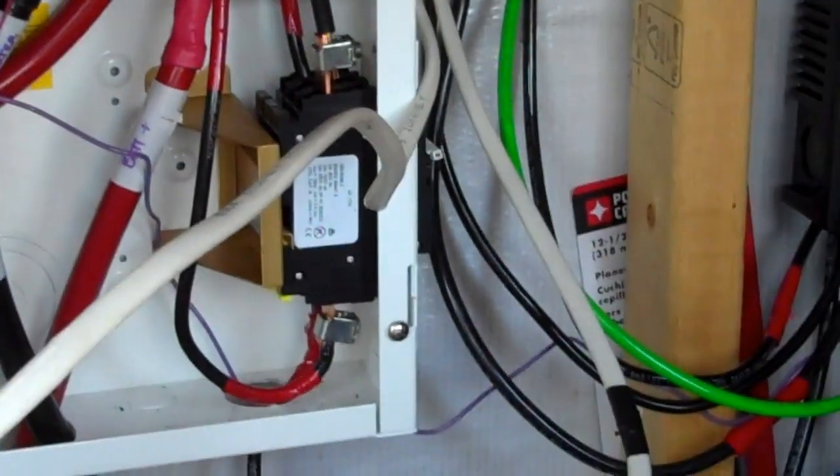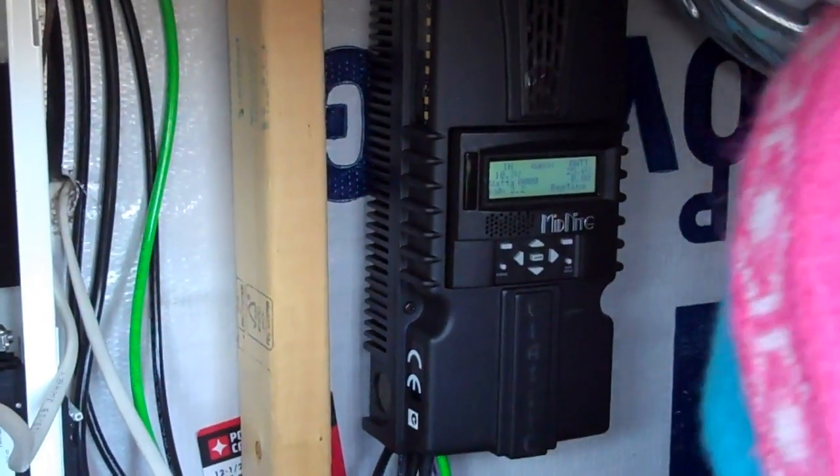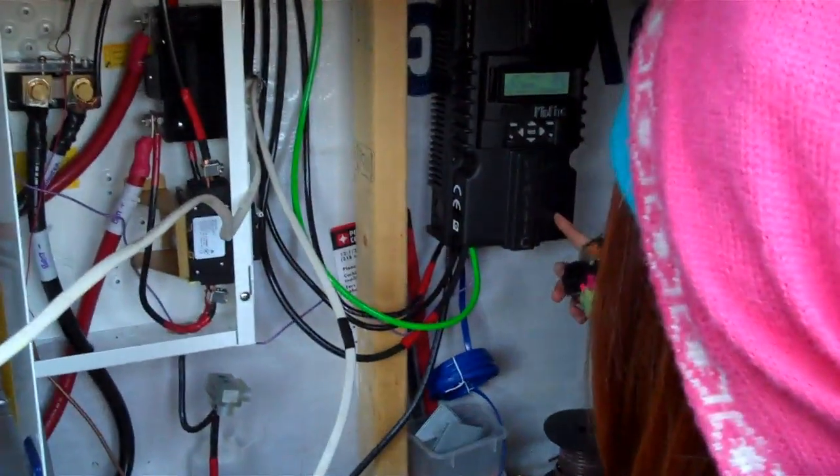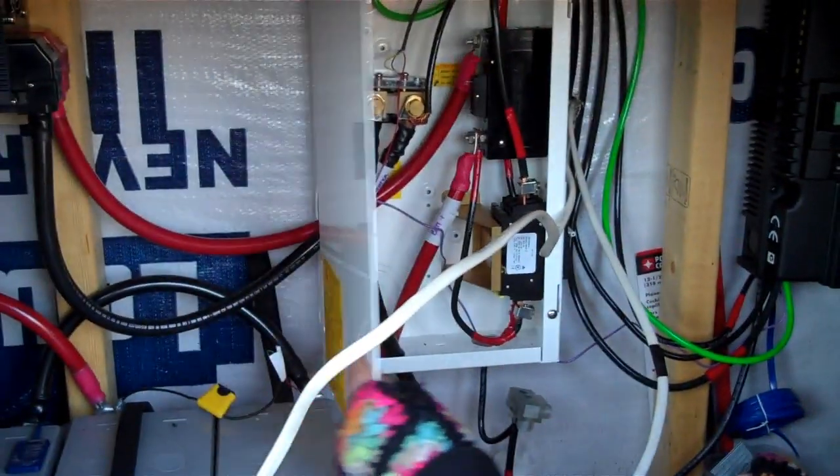We also have the negative, but that 4 gauge will fit into our Midnight Solar 150 Classic charge controller. So that main negative wire feeds directly into the Classic.